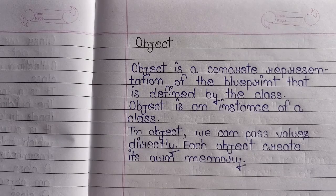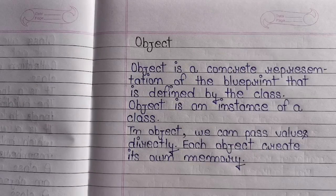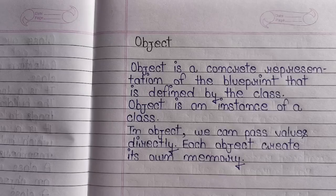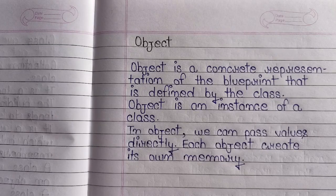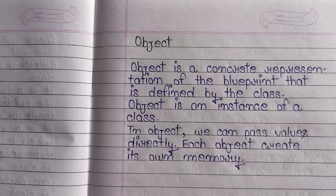Object में आप किसी भी class के लिए directly value pass कर सकते हो. Object में आप class के लिए एक से ज़्यादा object create कर सकते हो. जब class defined होती है, कोई भी memory allocate नहीं होती. लेकिन जब class का object create होता है, तब memory allocate हो जाती है.